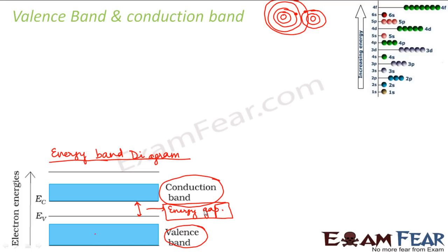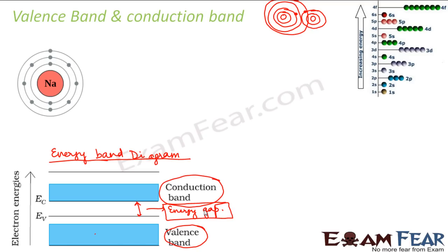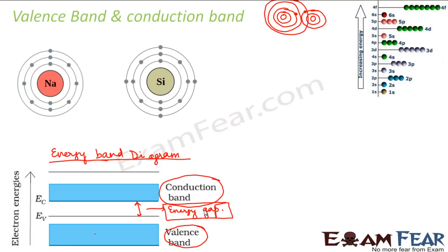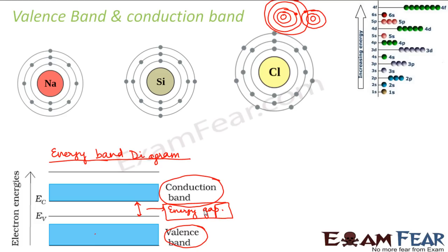The energy gap is the key component which classifies a substance as a conductor, semiconductor, or insulator. So these are the three important things — the valence band, the conduction band, and the energy gap — and on the basis of this energy band diagram we will continue. Now let us take the example of three different categories: sodium, which is a metal and hence a conductor; silicon, which is a semiconductor; and chlorine, which is an insulator.